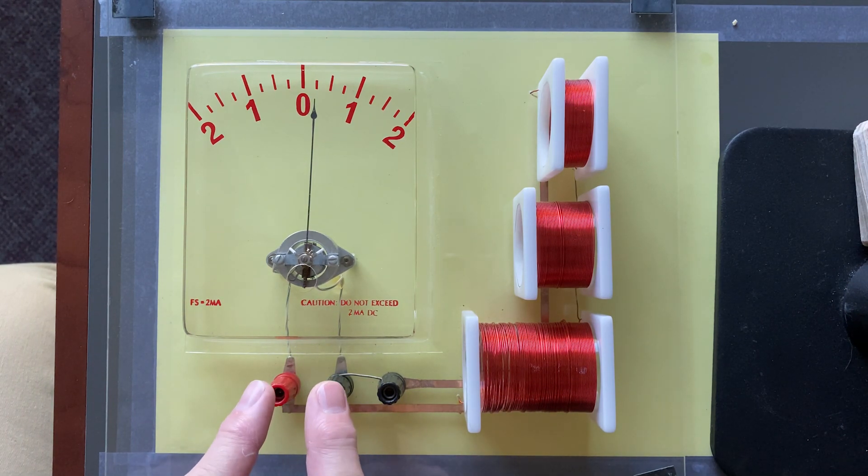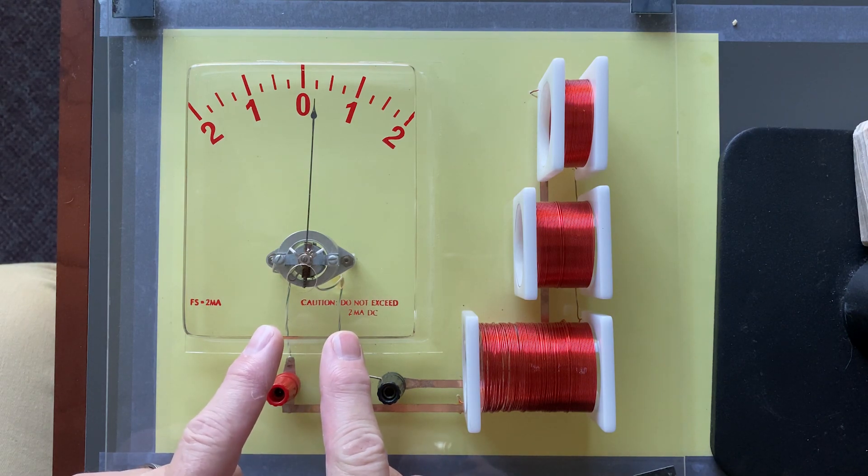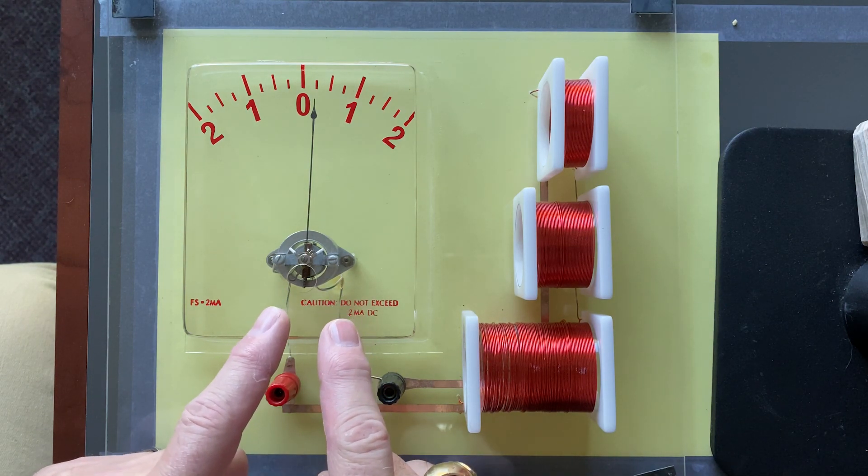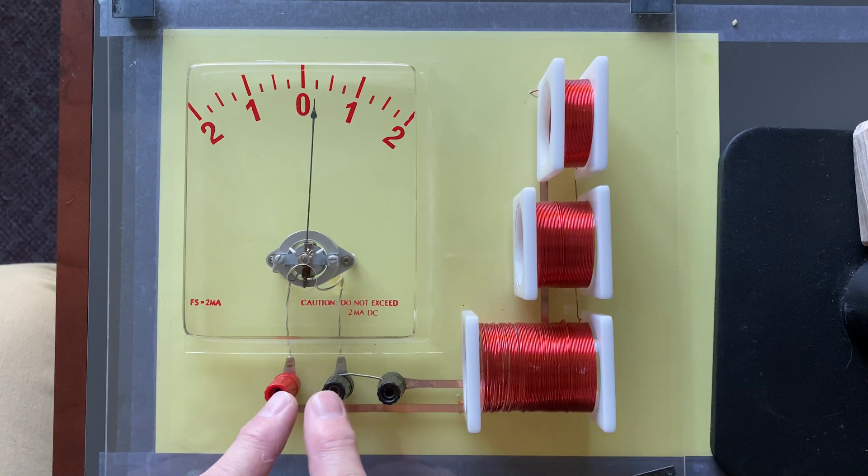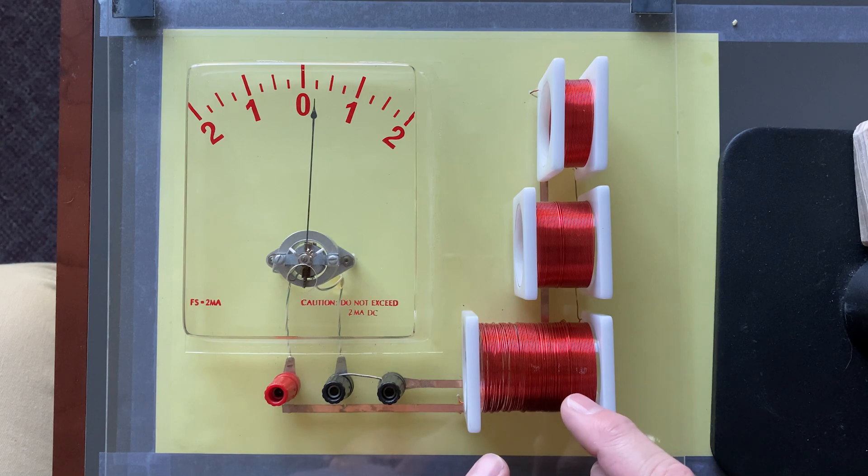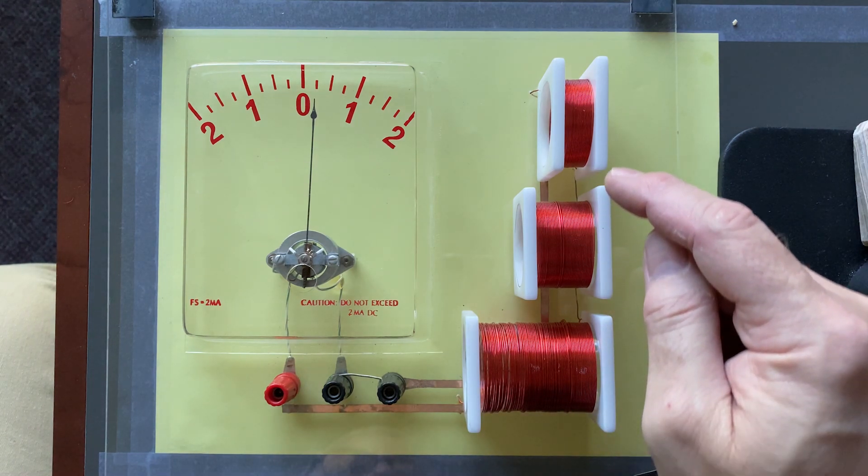Hooked up to the galvanometer are these terminals. You could hook up a power supply here. You can see there's two wires going up to the galvanometer that come down here. But we're not going to use the terminals because the galvanometer is also hooked up to each of these coils here.